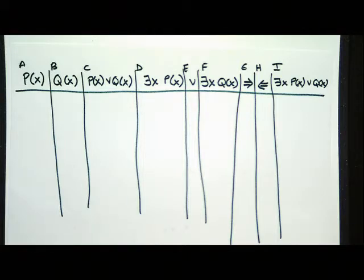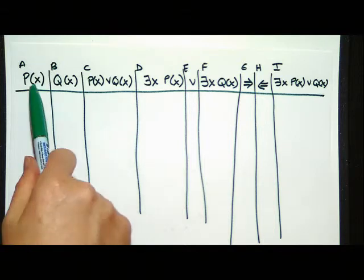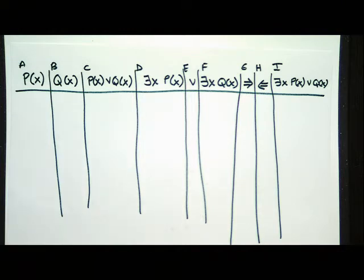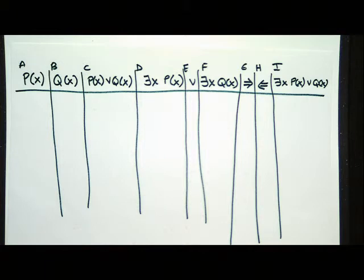Which column can you fill out first? A couple of people are suggesting columns A and B. However, in a truth table we need to write down all possible values. If we need X's, we might have to write down all integers — for example, if the universe of discourse for X is all integers. Nobody wants to do that, so let's not do columns A or B first.